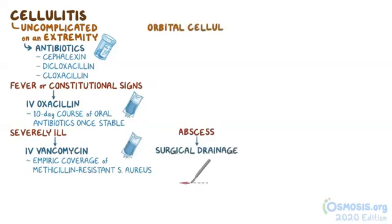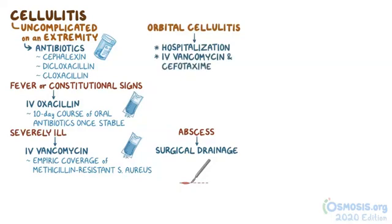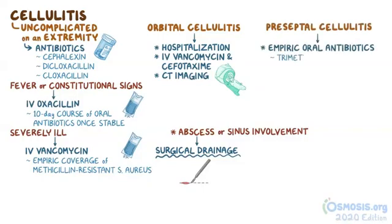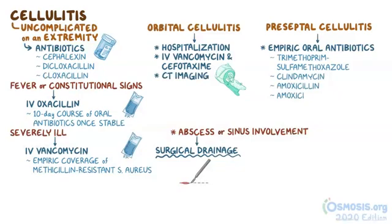In orbital cellulitis, hospitalization and IV vancomycin and cefotaxime are usually indicated. All individuals require CT imaging of the orbit to assess the extent of the inflammation. If there is evidence of an abscess or sinus involvement, then surgical drainage may be required. For preseptal cellulitis, empiric oral antibiotics include trimethoprim-sulfamethoxazole or clindamycin, along with amoxicillin, amoxicillin-clavulanic acid, or cefpodoxime.